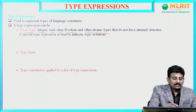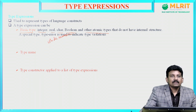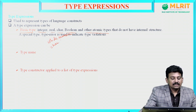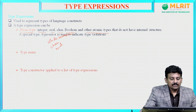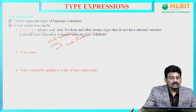Integer is a basic type representing whole numbers. Character represents individual characters. Real type represents real numbers. Boolean variable represents true or false. So these are the basic types.